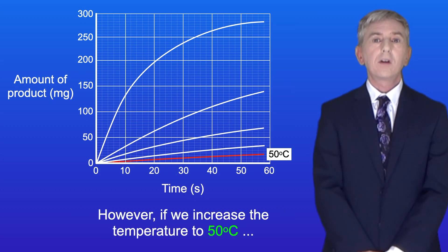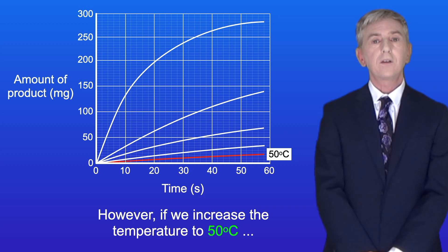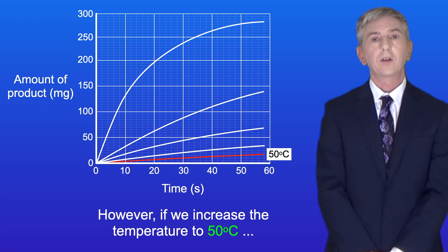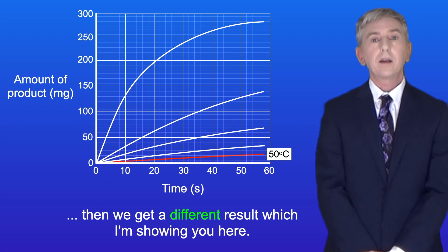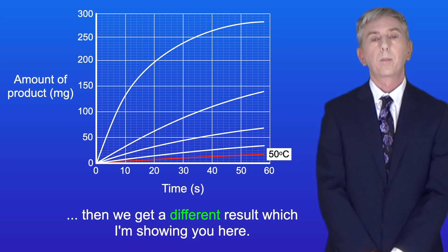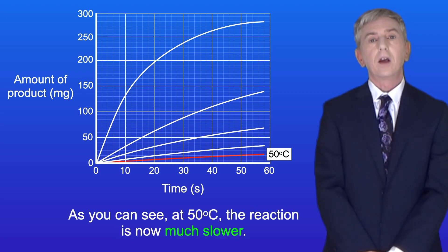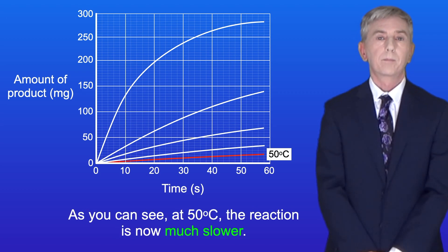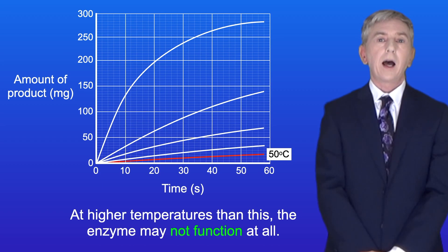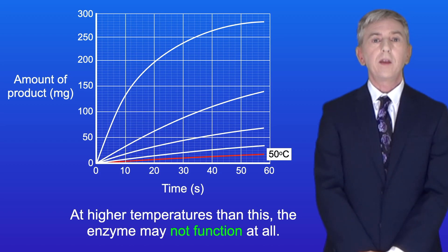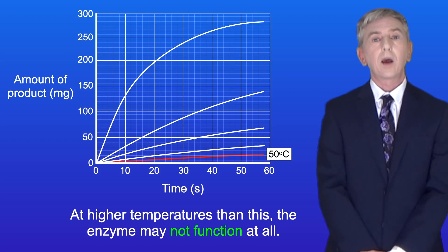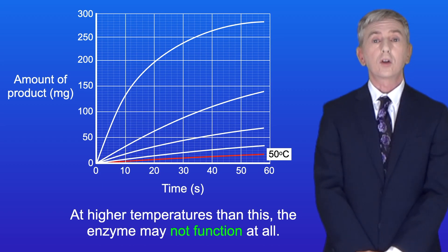However, if we increase the temperature to 50 degrees Celsius, then we get a different result. As you can see at 50 degrees Celsius, the reaction is now much slower. And at higher temperatures than this, the enzyme may not function at all.